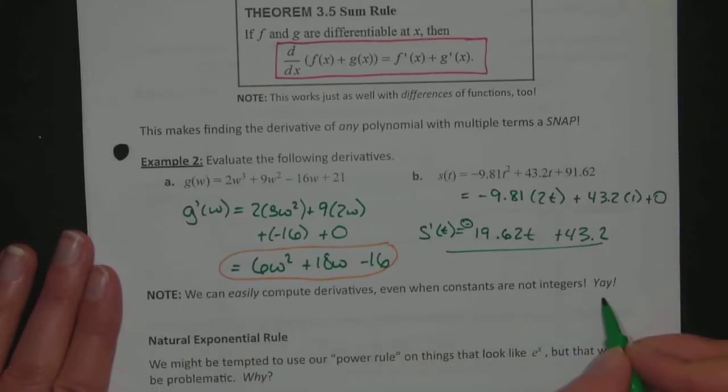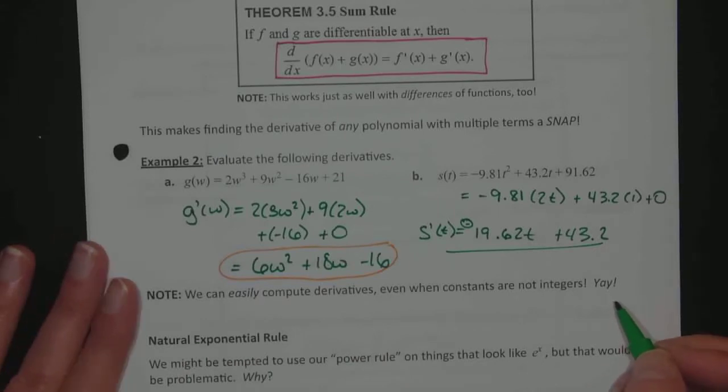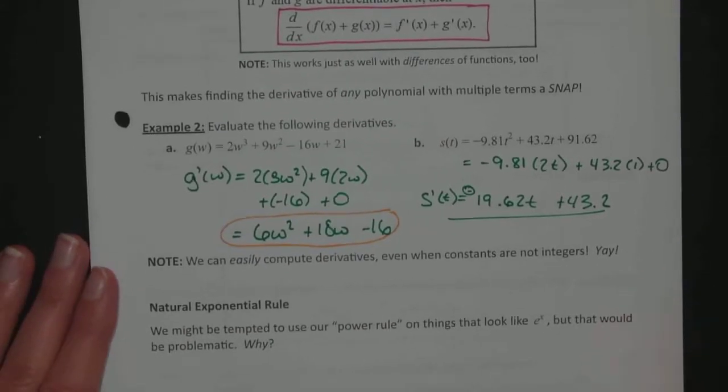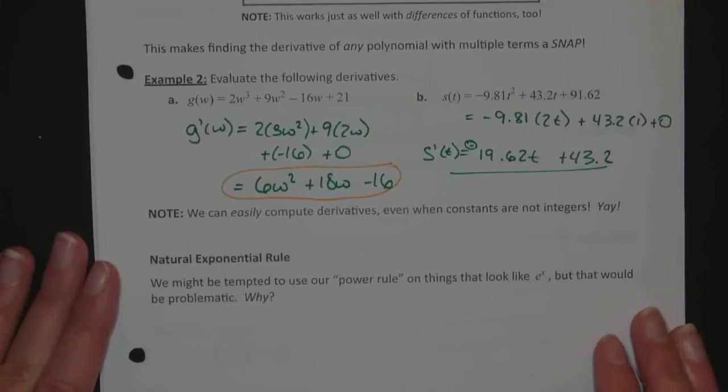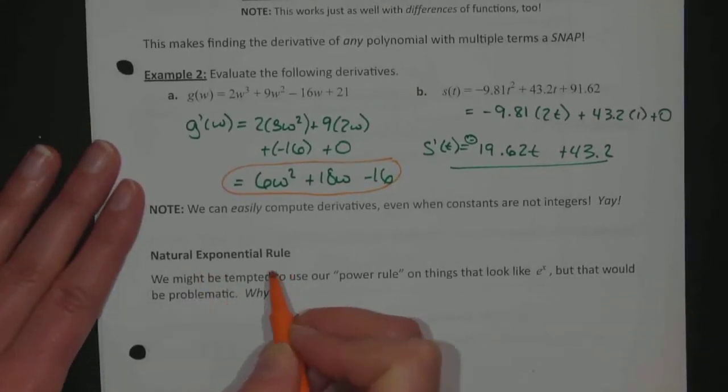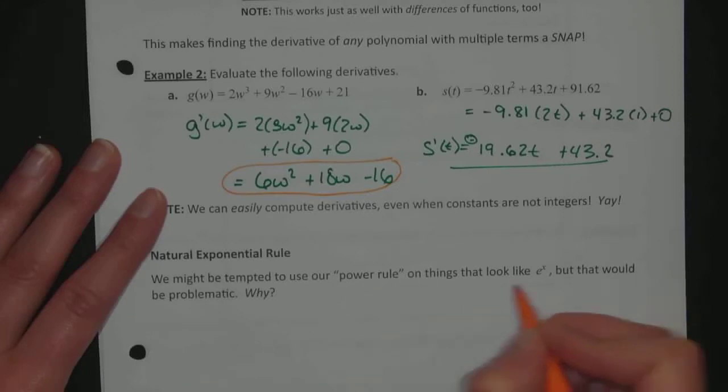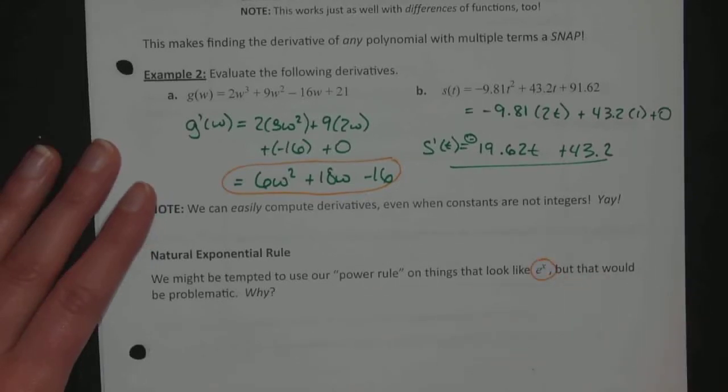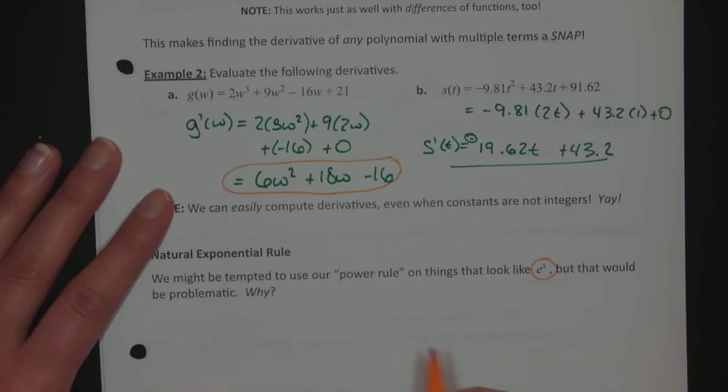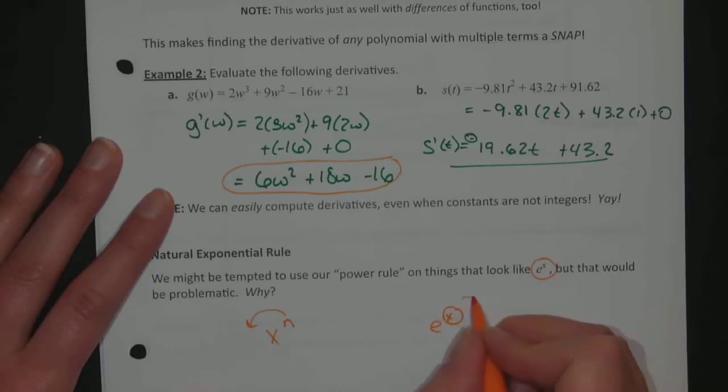The constants don't even need to be integers. We can evaluate the derivatives of any polynomial function. At the bottom of the page, we're looking at a new rule, the natural exponent rule. We might be tempted to use the power rule when a function looks like e to the x, but that is problematic. Remember that the power rule is used for variable-based numeric power. If I have something like e to the x, the variable is in the power, so what do you do with it to find its derivative?